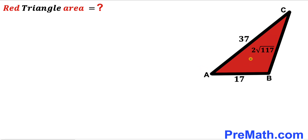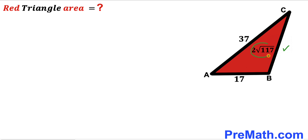Welcome to pre-math. In this video we have got this red shaded obtuse triangle ABC, as you can see in the given diagram, such that its side length AB is 17 units, its side length AC is 37, and finally its side length BC is 2 times square root of 117 units. Our task is to calculate the area of this triangle ABC.